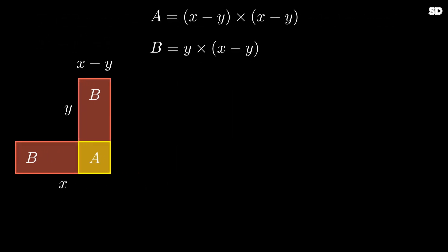Now the problem boils down to finding the total area of this L section. In other words, A plus 2 times B. The area A can be written as x minus y times x minus y, and the area B is y times x minus y.